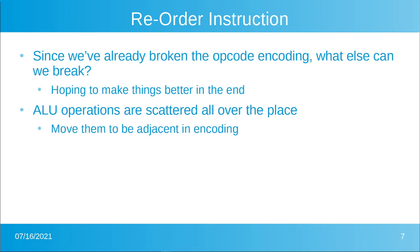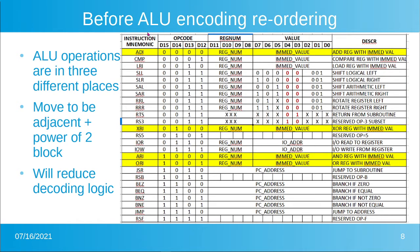Since we've already taken the leap to break the opcode encoding, what else can we break, with the hope of making things better in the end? The low-hanging fruit is ALU operations — they're scattered all over the place. Add immediate is at 0000, XOR immediate at 0100, and it would be nice to move them all to adjacent coding. If we pack all four ALU operations together, the ALU could use fewer bits of decoding — just checking if the first two bits match a pattern. We can make those first two bits the same for all four ALU opcodes, giving us a good bang for the buck.